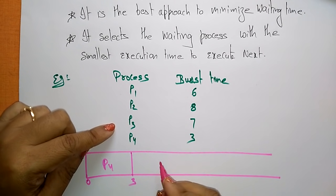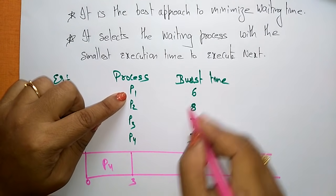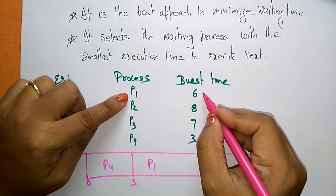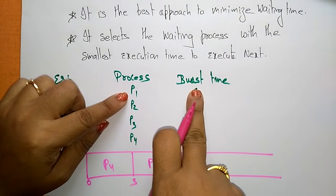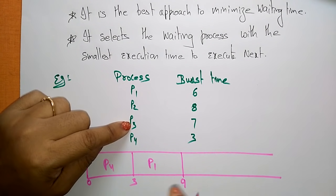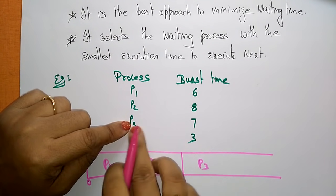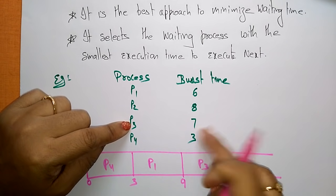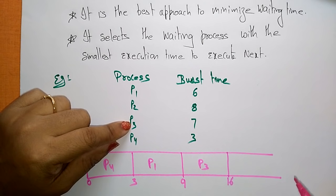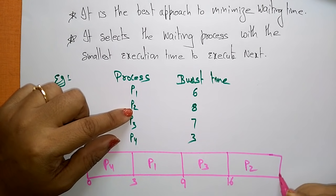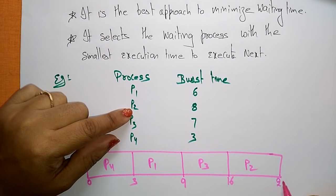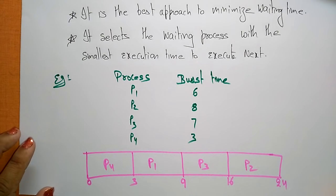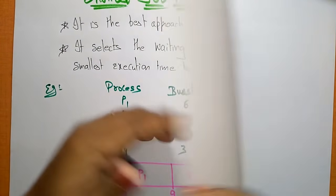So first the CPU executes process P4: 0 to 3. Next it executes P1, so 3 plus 6 equals 9. Next is P3, whose burst time is 7, so 9 plus 7 equals 16. And last is P2, so 16 plus 8 equals 24.